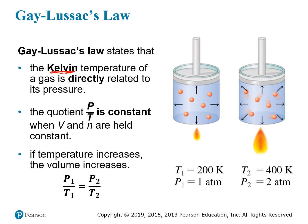The Kelvin temperature of a gas is directly related to its pressure, meaning if you increase the temperature, you'll increase the pressure as well. So if you double the temperature from 200 to 400 K, the pressure will double — in this case from one atmosphere to two atmospheres.